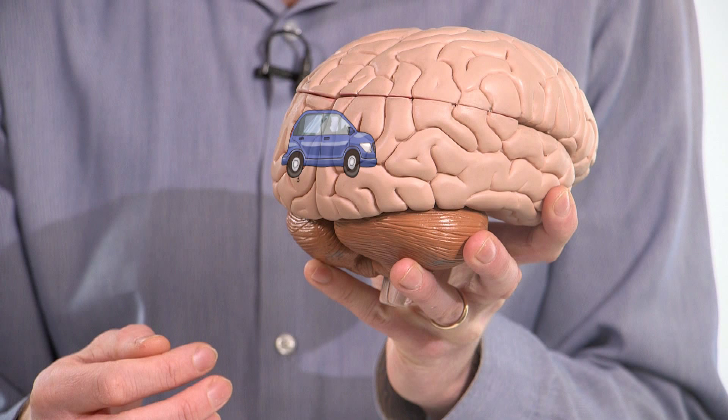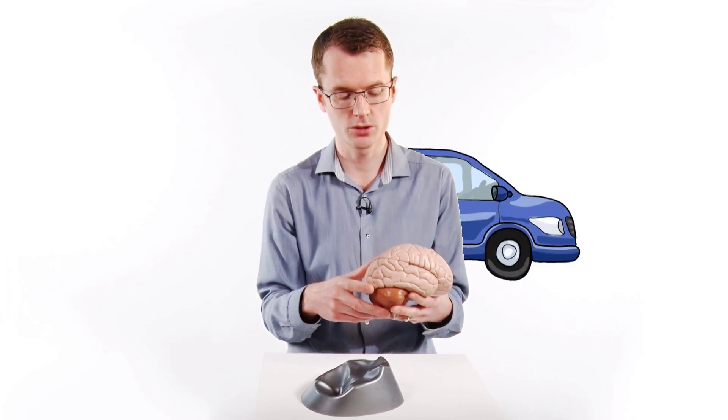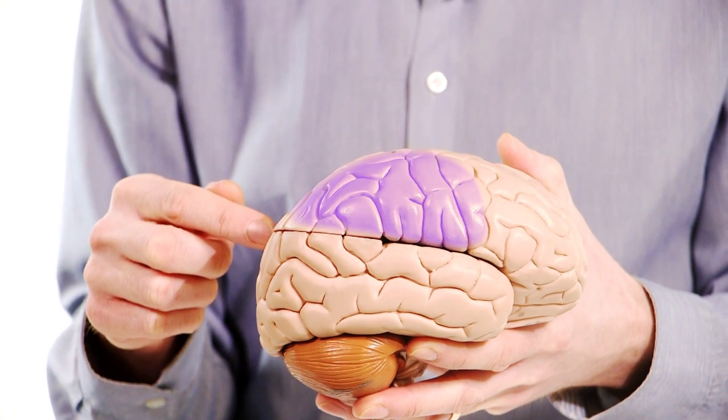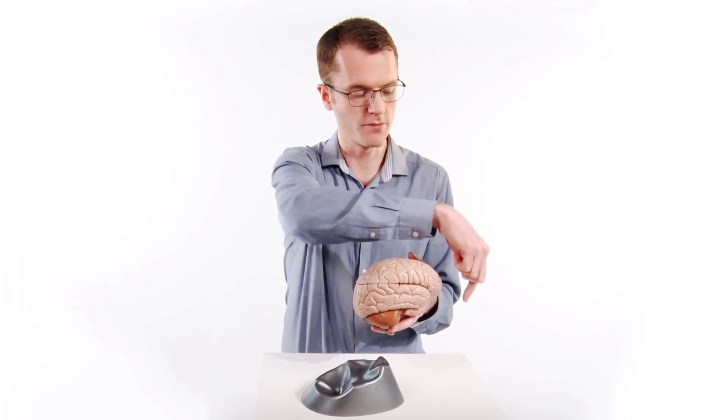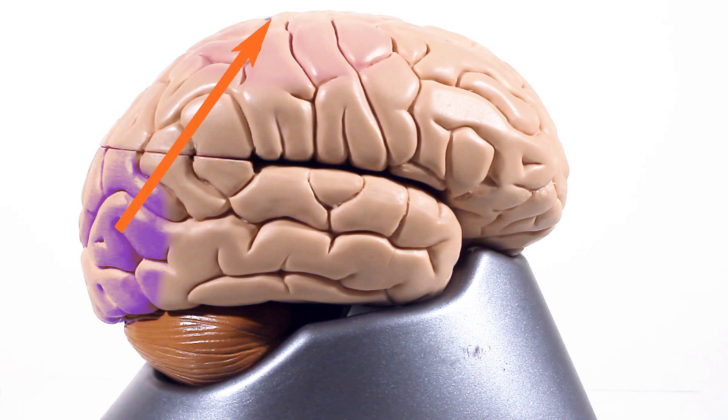So we want to know something about the car. We want to know where it's going. Is it going fast or slow? And that is told us by the parietal lobe here. So the signals come from the front to the back of the brain, and the occipital lobe sends the signals up here to the parietal lobe to tell us how fast the car is going.